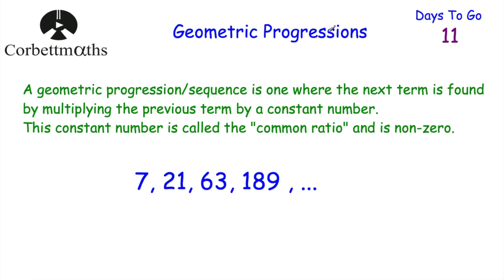Today we're going to look at geometric progressions or geometric sequences. We've looked at linear sequences — ones that go up or down by the same amount each time. I've also looked at quadratic sequences, where the second differences are the same. But in this video, we're going to look at geometric progressions, which are ones where the next term is found by multiplying the previous term by a constant number.